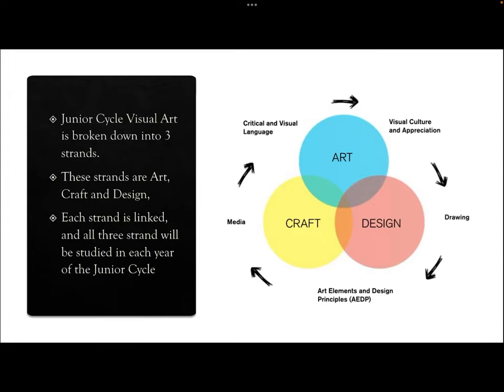Junior cycle visual art is broken down into three strands: art, craft and design. Each strand is linked and all three strands will be studied in each year of the junior cycle. Strand number one is art, which can be described as drawing and painting — showcasing your creative ideas in a visual way.